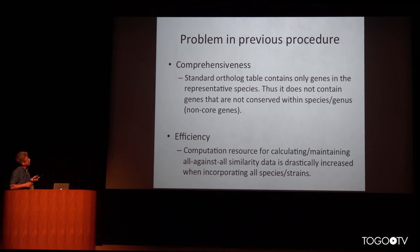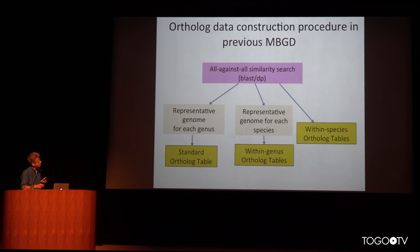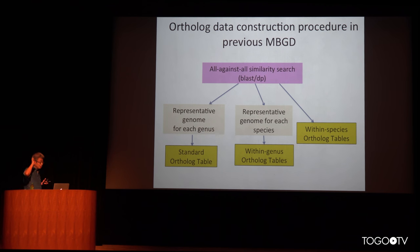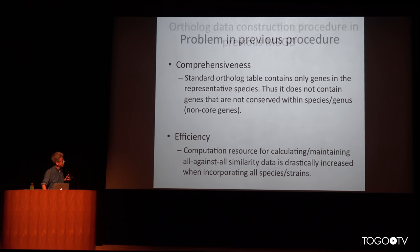Another problem is efficiency. If we consider only the standard ortholog table, the computation cost is low. But we also consider within-genus and within-species relationships, and we calculate all-against-all similarity searches in MBGD. In this case, the computation cost is very large, because calculating all-against-all similarity for so many genomes of the same species or genus is very time consuming.